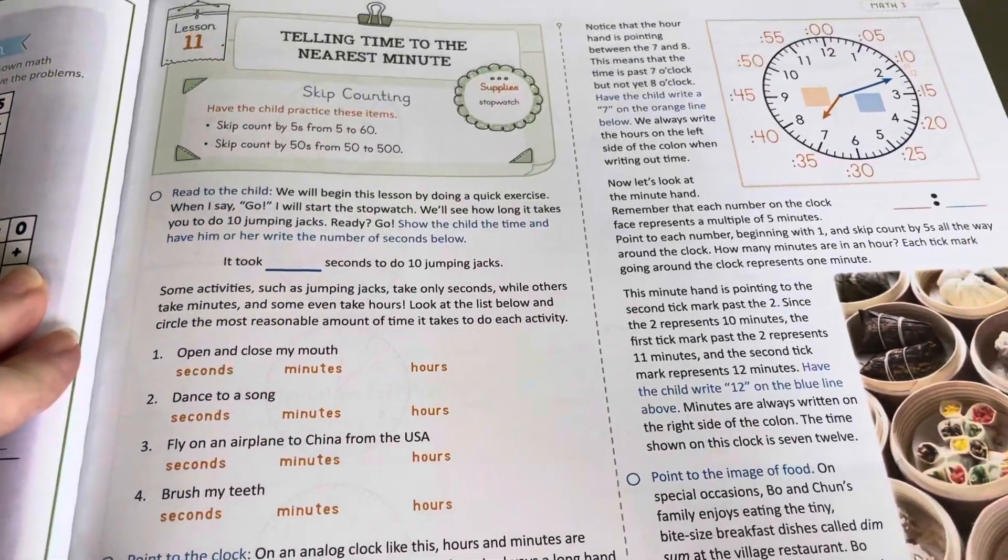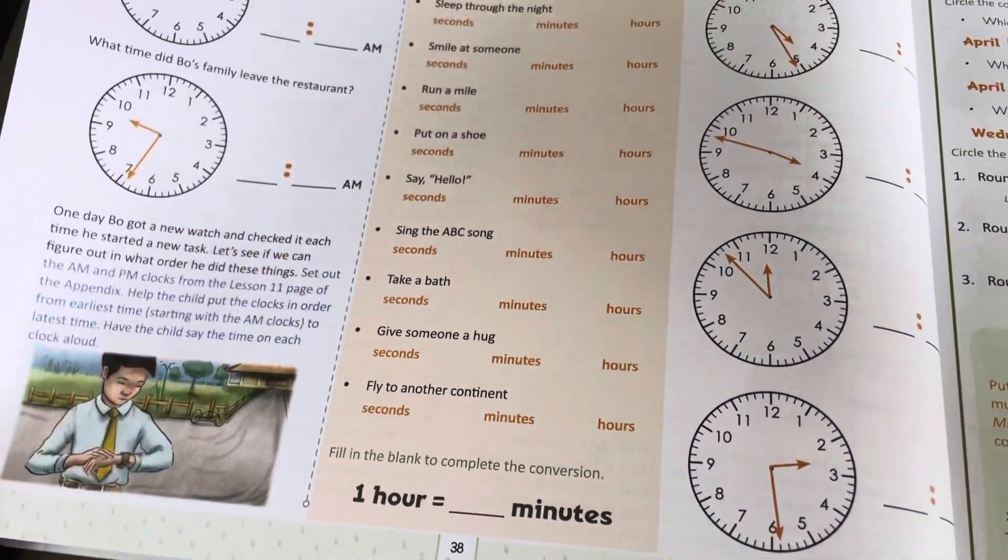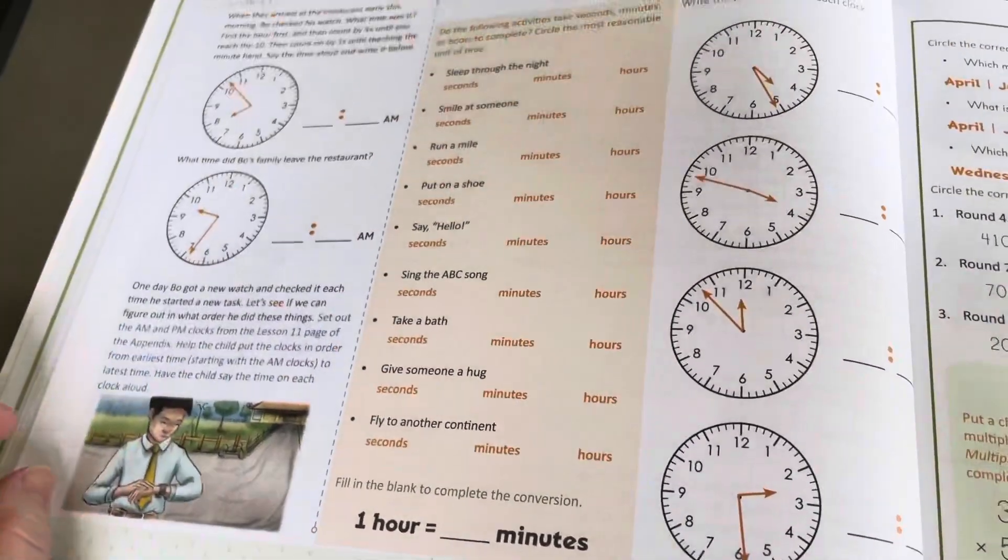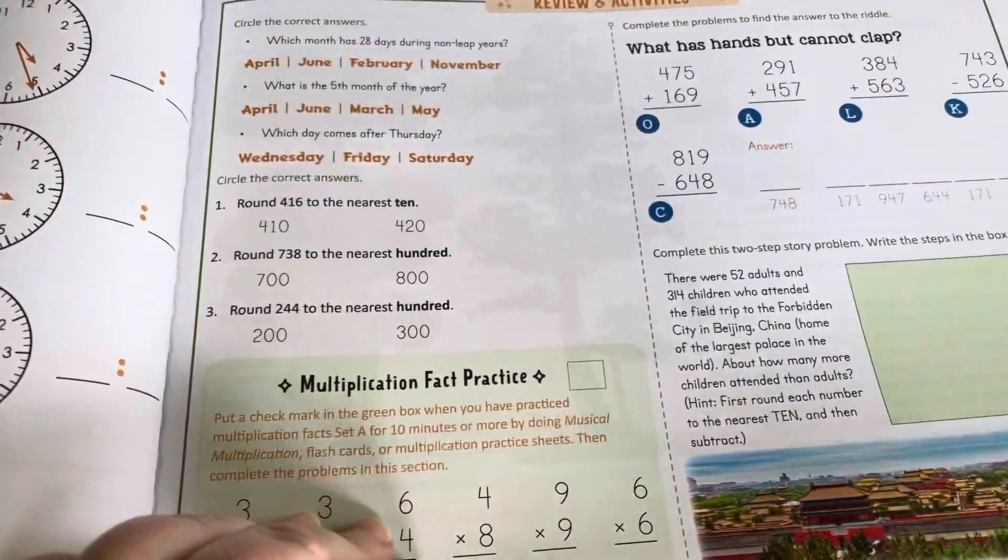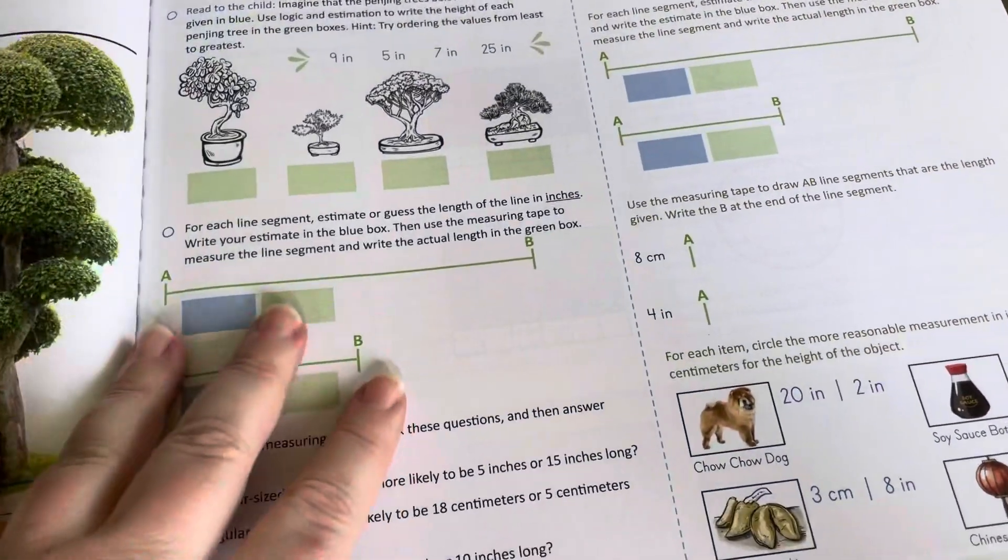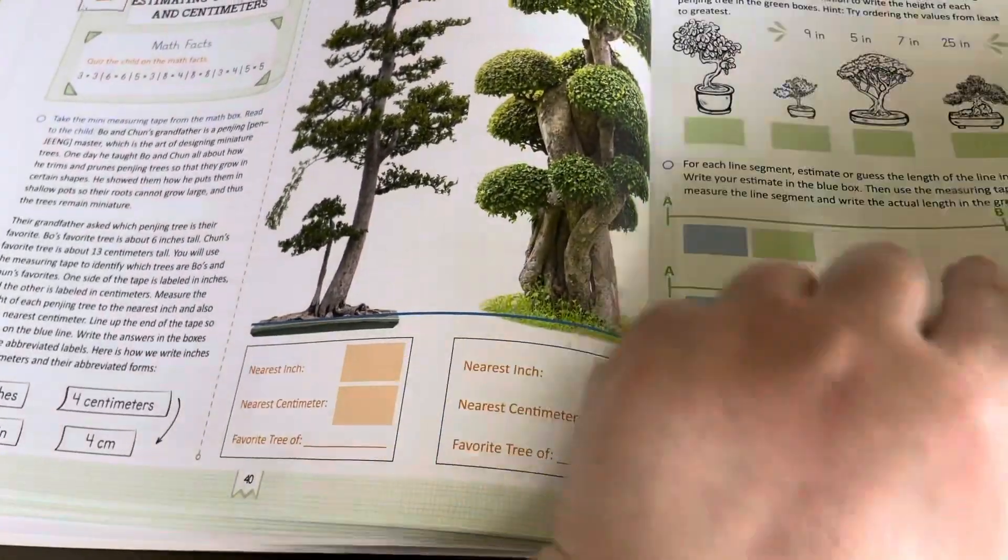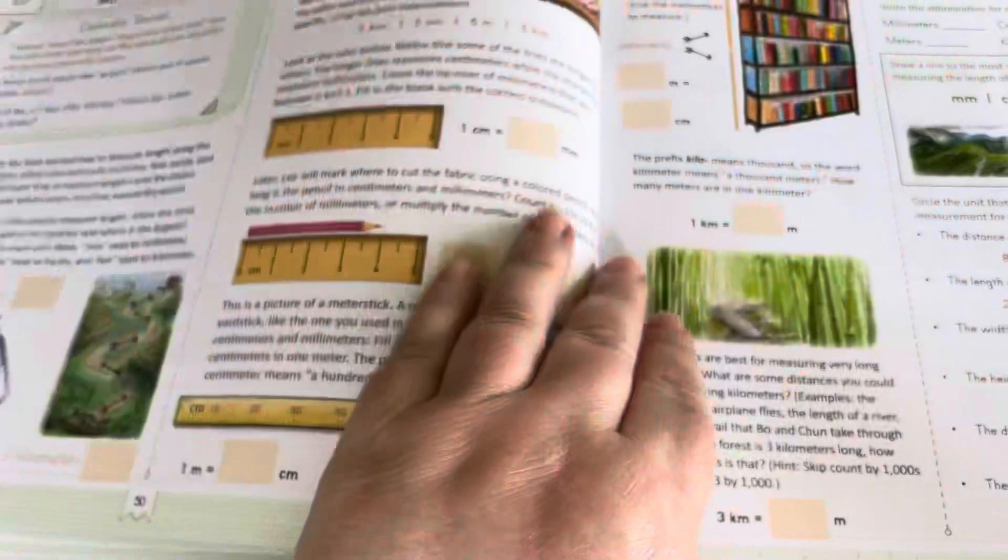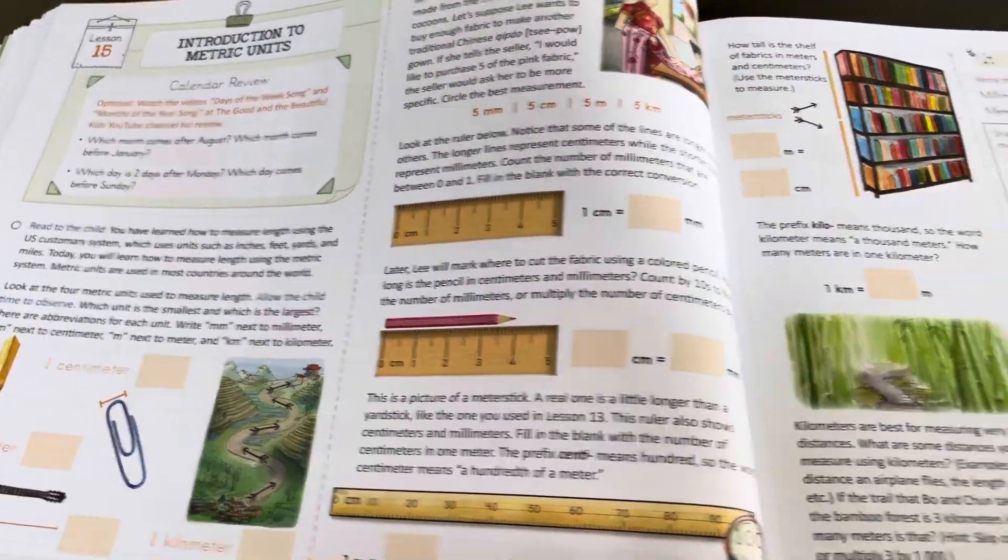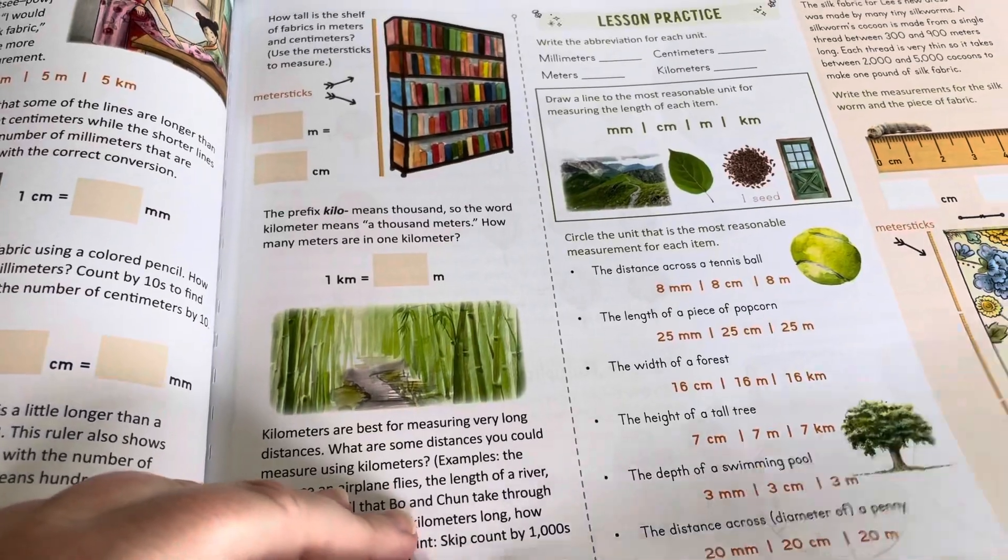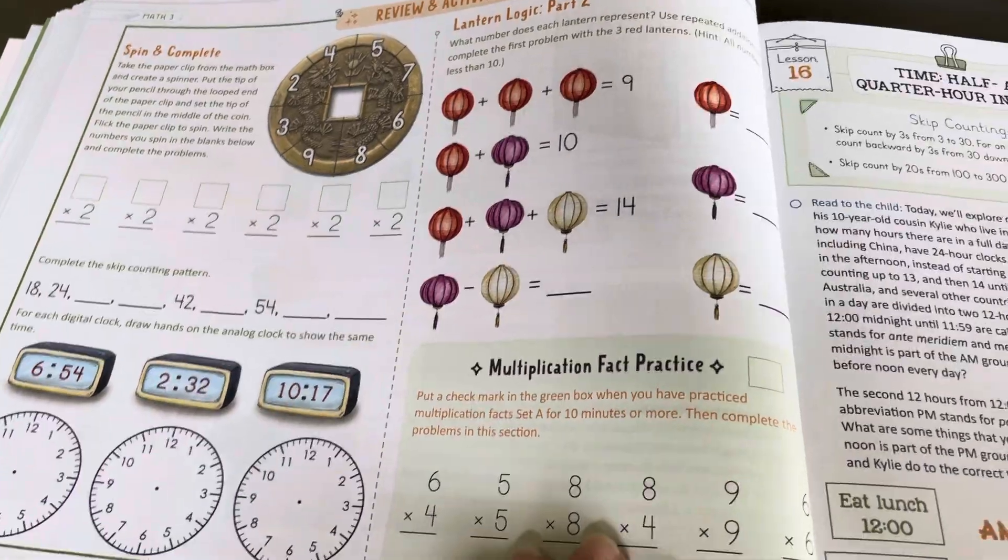I'm going to skip over. This is lesson 11, telling time to the nearest minute. This lesson is only three pages long. So I'll have to divide that up. We have measuring and estimating using centimeters.